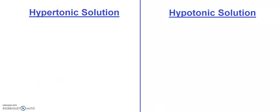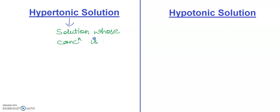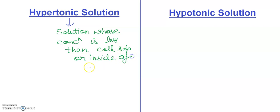We are going to discuss hypotonic first. In a hypotonic solution, the concentration of the solution is less than that of the cell sap, meaning the concentration inside the cell is more, and the concentration outside the cell is less. That is the hypotonic solution.